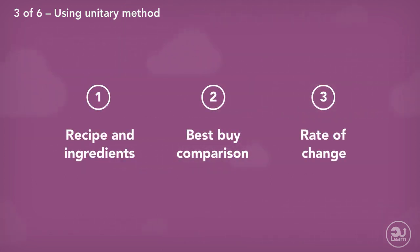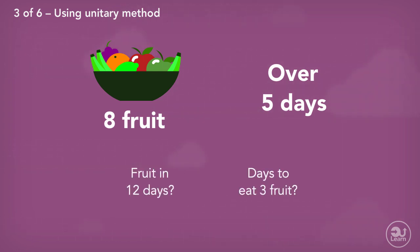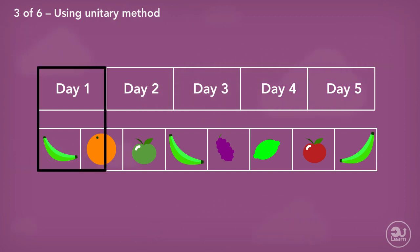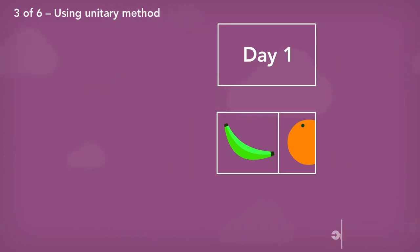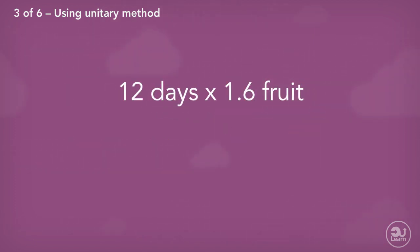The last type of question I'll show in this video is the rate something can be completed. For example, Jack eats 8 fruit over 5 days. How many fruits will he eat in 12 days? For the first part of the question, we would need to find out how much fruit Jack eats in one day. We divide the days and fruits by 5. Jack eats fruit at a rate of 1.6 fruit per day. Therefore, for 12 days, we multiply 1.6 by 12, which equals 19.2 fruit.